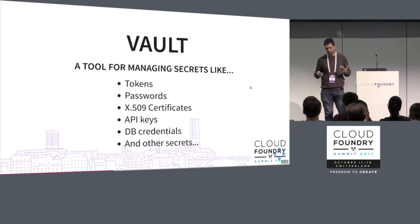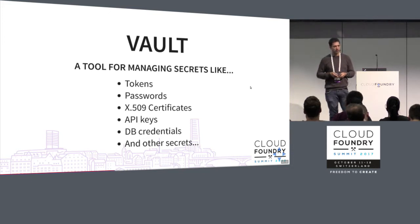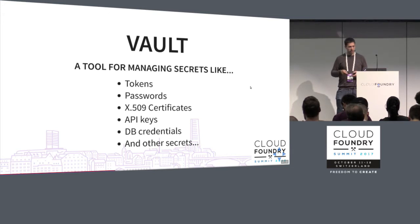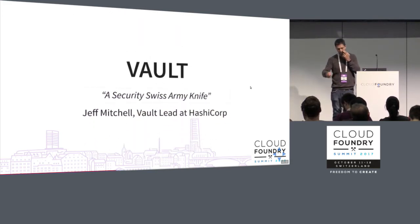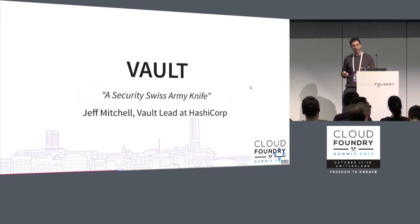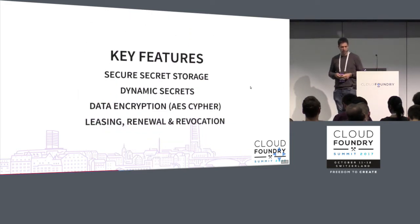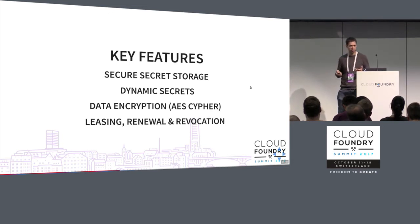Vault is a tool for managing all kinds of secrets. It can deal with tokens, passwords, even create SSL certificates for your local CA automatically, API keys, DB credentials, and lots of other secrets. The Vault lead at HashiCorp calls it a 'security Swiss Army knife' — very suitable here in Switzerland. Most people think of Vault as a simple key-value security store, but it's much more than that. Key features include secure secret storage and the ability to create dynamic secrets, which is very important for database credential rotation.